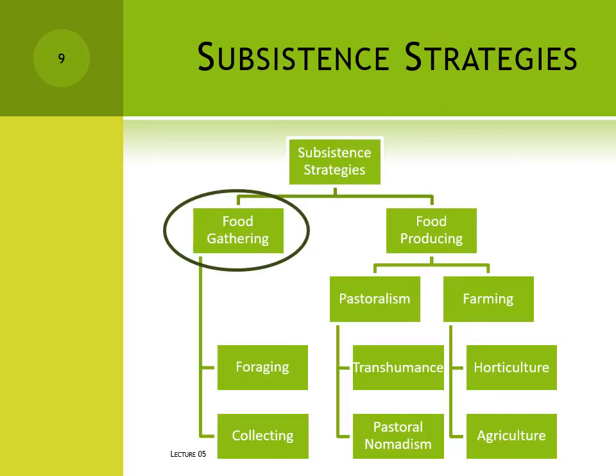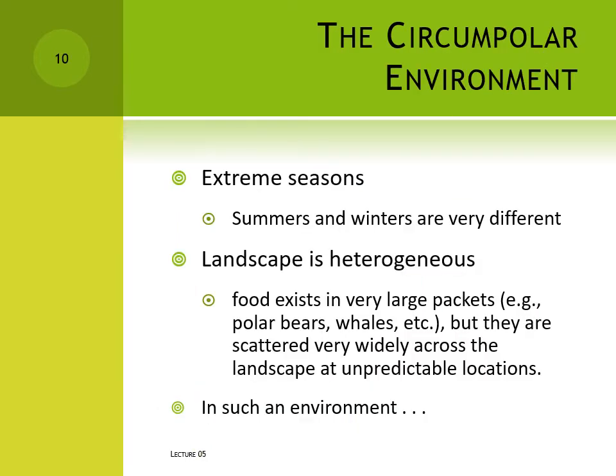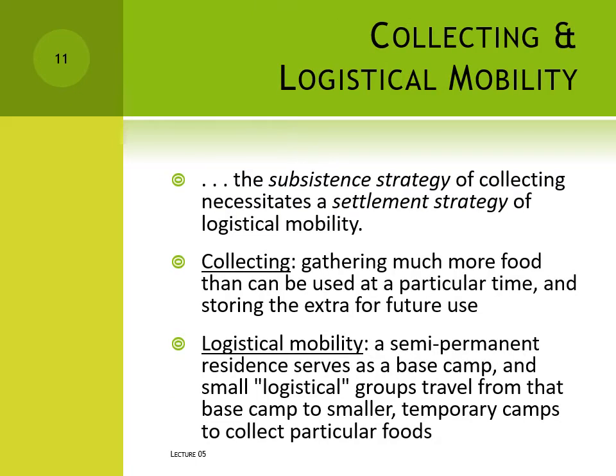The other basic food-gathering strategy is collecting. Nearer the poles in Inuit or Siberian territory, the landscape is heterogeneous. There are huge individual packets of food – polar bears, whales, etc. – but they're widely scattered on the landscape and comparatively hard to locate. In this case the best strategy is collecting and logistical mobility. Collecting is the process of gathering much more food than you can immediately use, then storing the extra for future use.